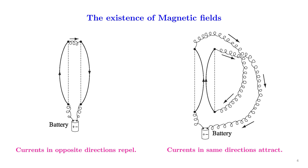How do we identify the existence of magnetic fields? The magnetic fields are identified by the force they exert. For example, let us consider two conductors which are connected in series to a battery. We are considering the first case where the currents are in the opposite direction. In this case, we will see that when there is a current flow in the opposite direction, the two conductors repel each other.